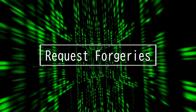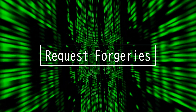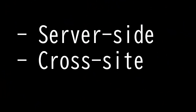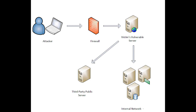This video is going to be on request forgeries. There are two types that you need to memorize for the Security Plus 601 exam: server-side and cross-site request forgeries. Server-side request forgery is designed to explore how a server processes external information. Some web applications may be designed to read information from or write information to a particular URL.